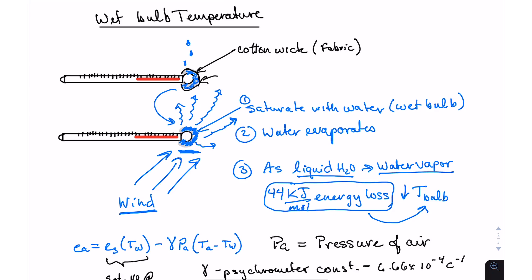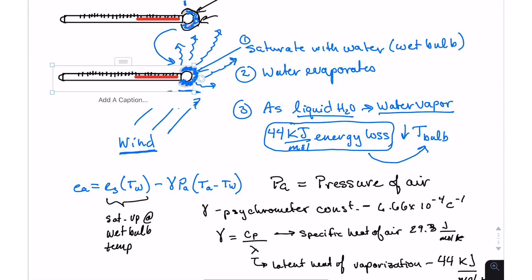When that happens, it decreases the temperature of this bulb that we're talking about. When it decreases that temperature, essentially this temperature, the red part here, goes down. When that happens, we actually wait till we've reached that maximum temperature decrease, and we take that as our wet bulb temperature, our TW.